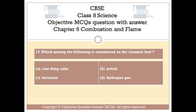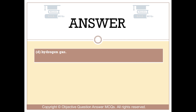Question number 13: Which among the following is considered as the cleanest fuel? Option A: cow dung cake. Option B: petrol. Option C: kerosene. Option D: hydrogen gas. The right answer is Option D: hydrogen gas.